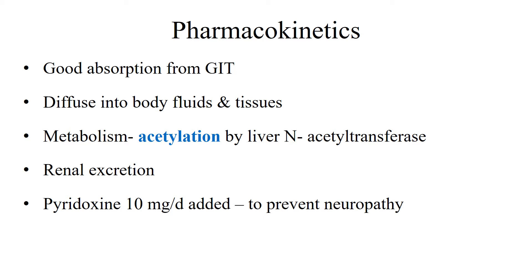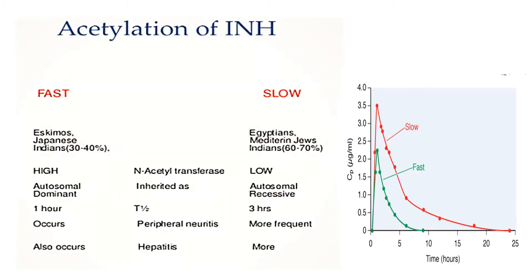Isoniazid is structurally similar to pyridoxine. It interferes with the formation of pyridoxal phosphate, so there are chances of peripheral neuritis in a person consuming isoniazid. Genetic variability exists between people in the rate of metabolism of isoniazid, that is, in the rate of acetylation. There are fast acetylators and slow acetylators depending upon their genetic features.